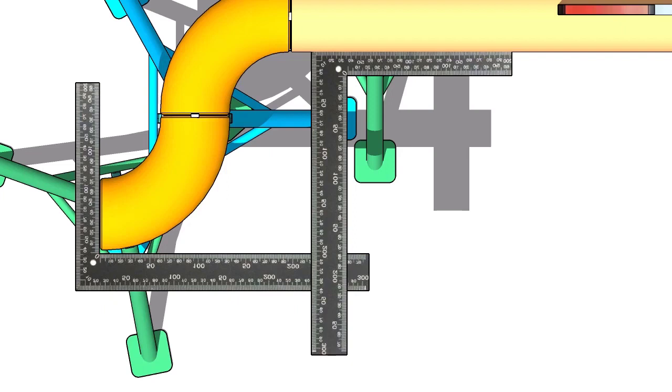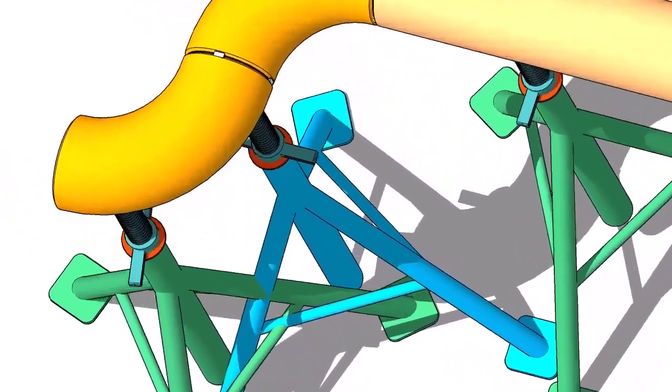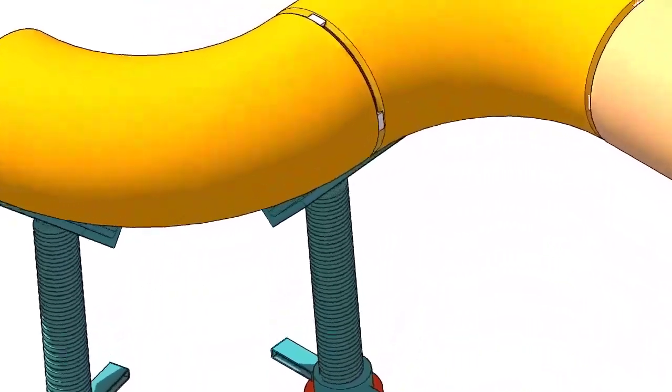Hold two right angles, one on the face of the elbow and one on the pipe side. Now use another right angle and check the squareness. Tack weld on both sides of the elbow.